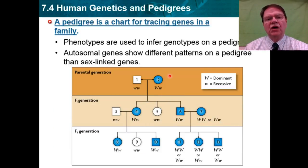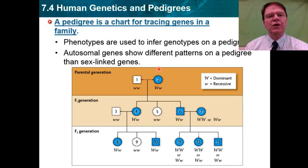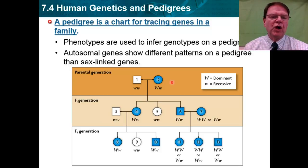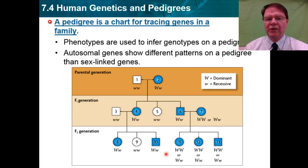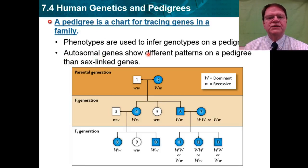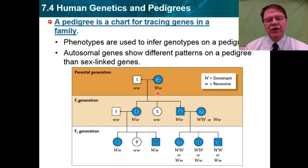One of the ways that we examine and uncover these kinds of traits is something known as a pedigree, which allows us to trace out different kinds of genes through a family line. Sex-linked genes are going to present a very different pattern within a pedigree than those genes found on autosomes. With autosomes, you typically have a relatively even balance of a trait from male to female, as you can see in the chart here.